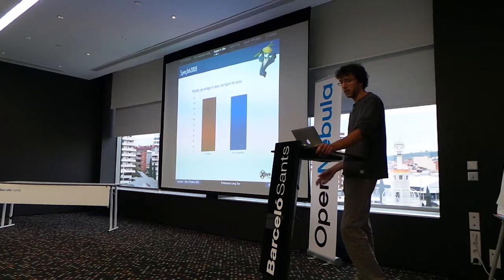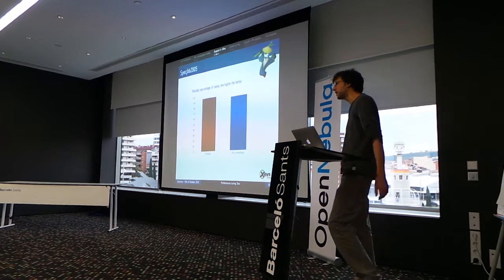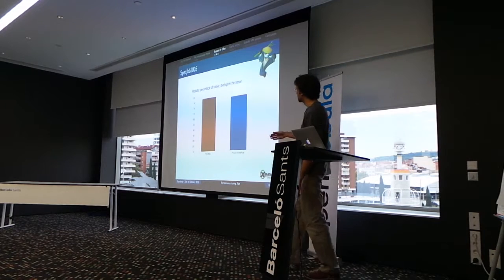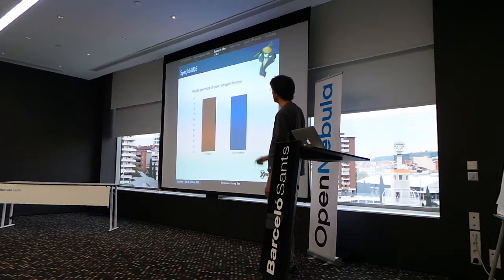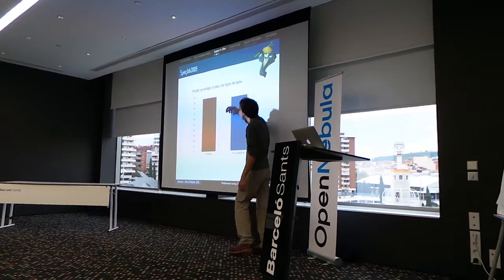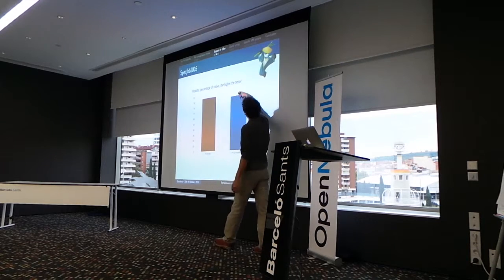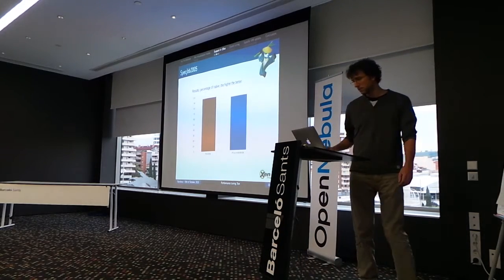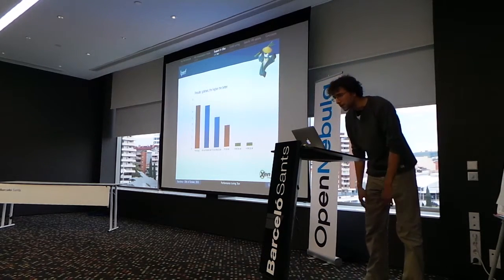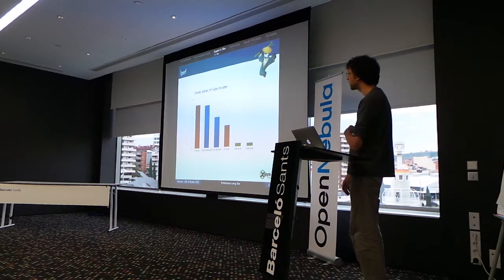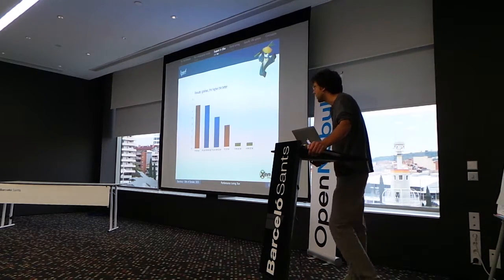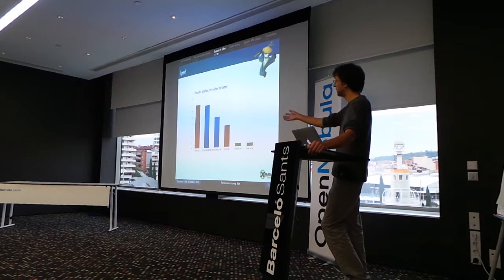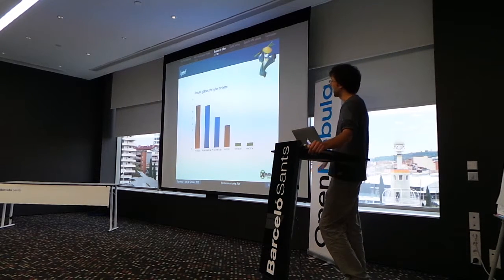Another interesting benchmark is SPECJBB, a Java benchmark. Here we can see that PV actually performs a little bit better than PV HVM, but they are mostly the same because the variance is quite high. Then we have an IPERF benchmark, which is a network throughput benchmark. PV 64-bit and PV HVM 64-bit more or less perform equally. Pure HVM guests without PV drivers perform really badly because you are using the software-emulated network card.